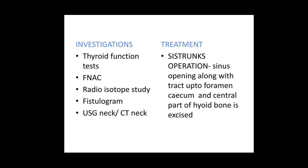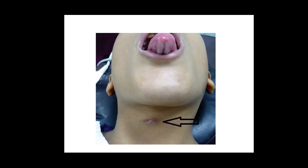The surgery for thyroglossal fistula is similar to that for the cyst — the Sistrunk operation. Here, instead of the cyst, the sinus opening along with the tract up to the foramen cecum and the central part of the hyoid bone is excised. You can see the fistula's opening and the tugging or dimpling around that opening on protrusion of the tongue.